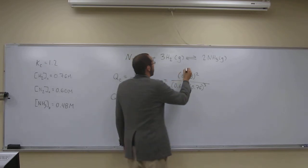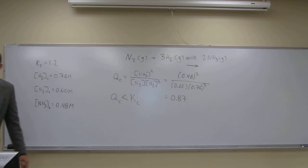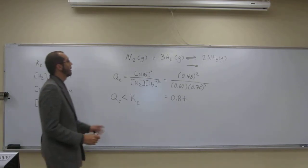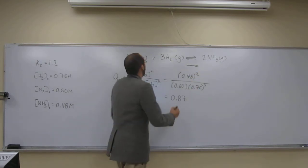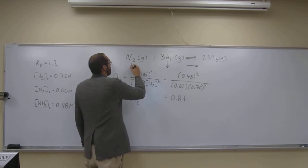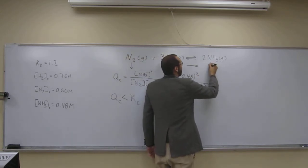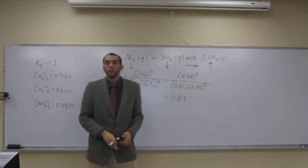So it still needs to go to the right. The question asked us which concentrations would increase and which would decrease. As the reaction goes to completion, if we're going to the right, the concentration of hydrogen gas is going to decrease, the concentration of nitrogen gas is going to decrease, and the concentration of ammonia is going to increase.